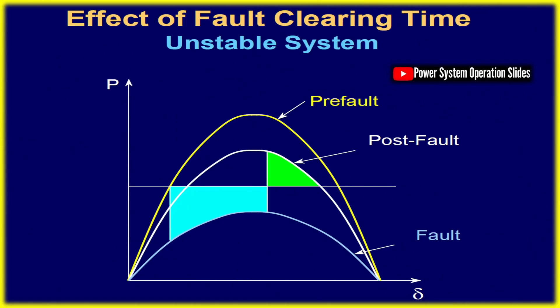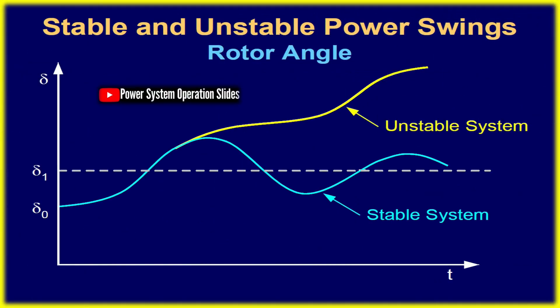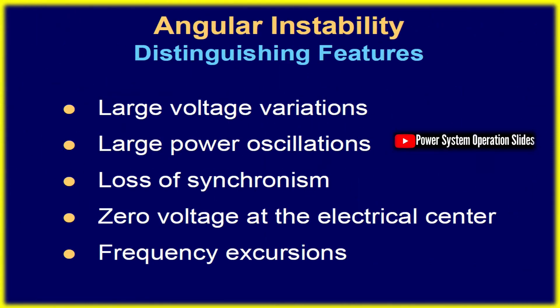Under normal conditions, a generator maintains constant speed by balancing electrical and mechanical torque. However, if a fault reduces transmitted power, the electrical torque drops while mechanical torque remains, causing rotor acceleration.